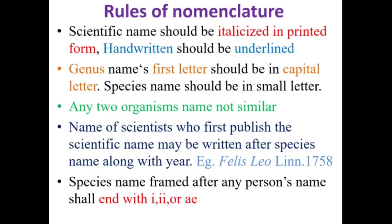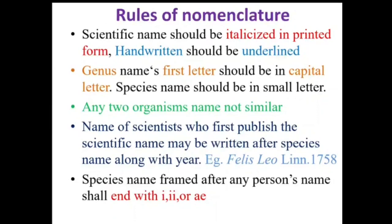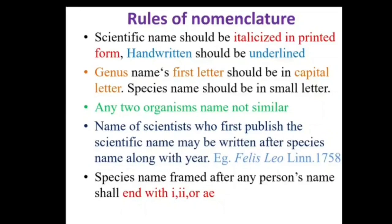No two scientific organism names should be similar. The name of the scientist who first published the scientific name may be written after the species name along with the year of publication. For example, Panthera leo Linnaeus, 1758 — Panthera is the genus name, leo is the species name, and Linnaeus published this name in 1758. Species names framed after a person's name shall end with 'i', 'ii', or 'ae'.